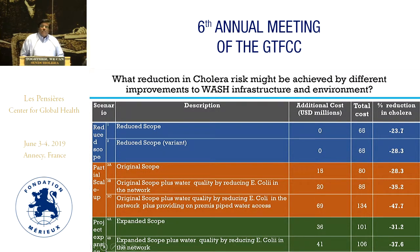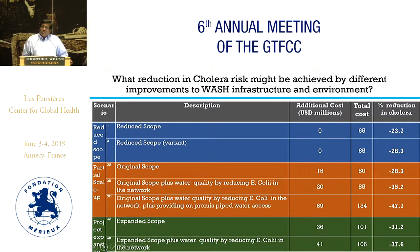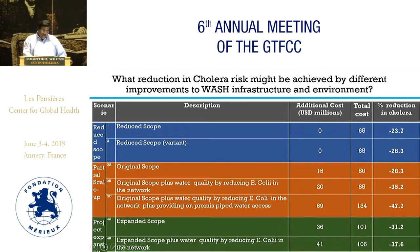For the Lusaka Sanitation Project with the Lusaka Water and Sanitation Company, different options were explored. The blue scenario represents a reduced version due to cost overruns, showing its projected impact on cholera citywide. The original version includes water supply investments in improving water quality and access. And the green expanded scenario is also presented. One of these two will be chosen for final implementation if negotiations go properly.